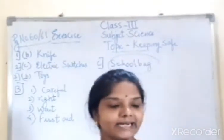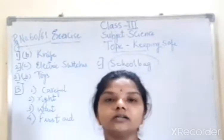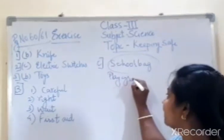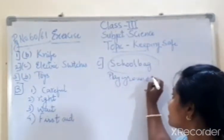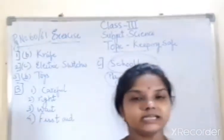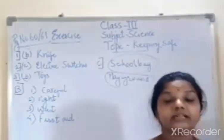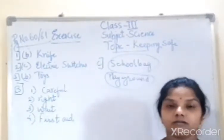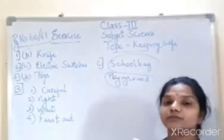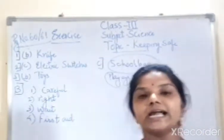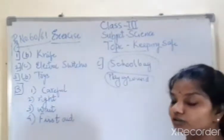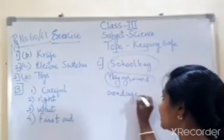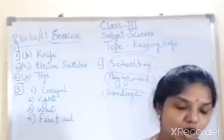Second group: scissors, band-aid, playground, cotton. The odd one out is playground — the others are things that should be kept in the first aid box. Third group: traffic light, zebra crossing, subway, or band-aid. Band-aid is the odd one out because traffic light, zebra crossing, and subway are all found on the road, but band-aid belongs in the first aid box.